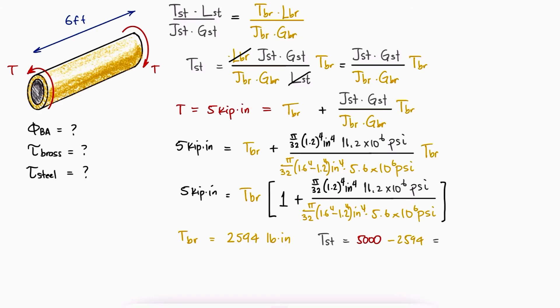Since the rest of the external torque goes to the steel, we now have the values to calculate the stress in the brass, the stress in the steel, and the angle of twist, which is the same for the steel or the brass.